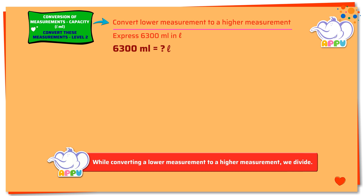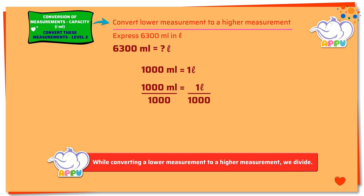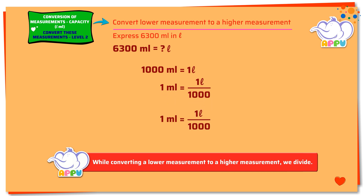We know that 1000 milliliters equals 1 liter. Dividing both sides by 1000, we get 1000 milliliters divided by 1000 equals 1 liter divided by 1000. 1000 divides 1000 once. Now we get 1 milliliter equals 1 liter divided by 1000.